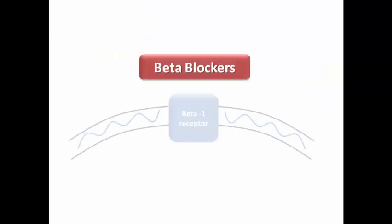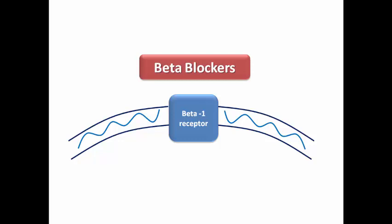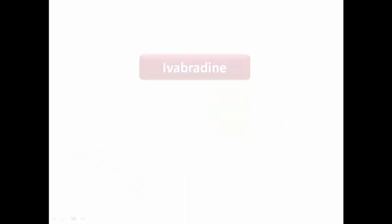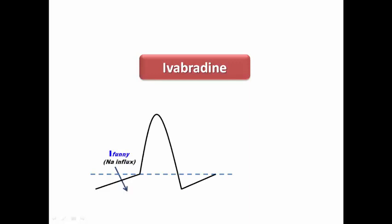We remind ourselves that beta blockers block the beta-1 receptors in the cardiac cell membrane resulting in negative chronotropic, dromotropic and inotropic effects. But ivabradine has a separate mechanism because it acts on the funny channels responsible for sodium influx and partly potassium influx.